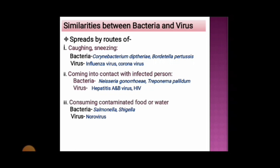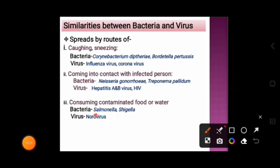One can also get disease by consuming contaminated food and water. People can harbor bacteria or viruses through contaminated food and water. The bacterium harbored from contaminated food or water is Salmonella, which causes salmonellosis. The virus one can get from contaminated food or water is norovirus, which causes diarrhea.